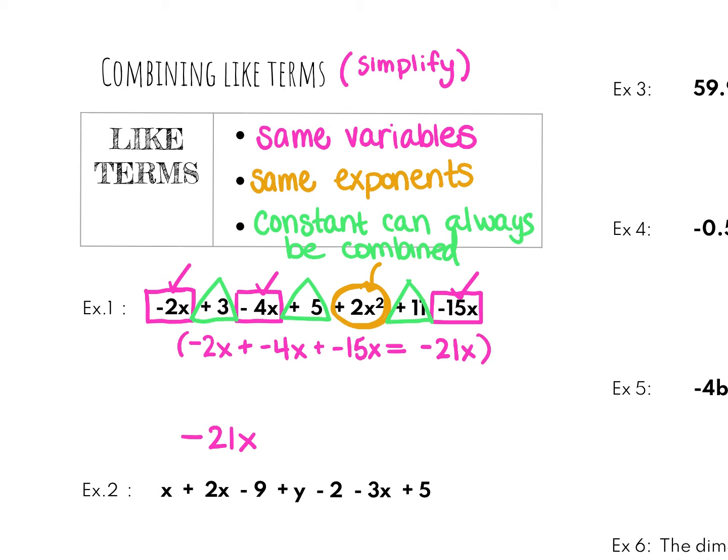Now I can take my 2x squared. I'm just going to bring my 2x squared down. There's nothing to combine and it's the only one that has been circled. And last but not least, I have my constants 3 plus 5 plus 11. That's going to give me 19. So I'm going to put the 19 here and I have simplified this expression.